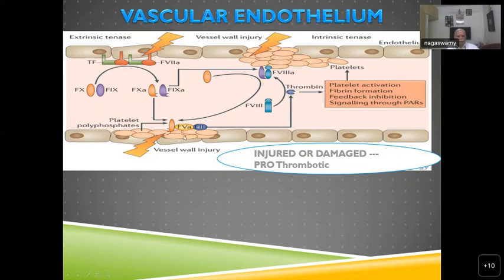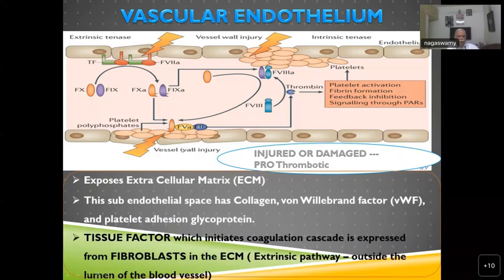Once the endothelial cells are lost, platelets immediately come and get stuck. Platelet adhesion — the sticking of platelet to the injured wall — should be distinguished from aggregation. Once adherent to the injured wall, platelets get activated, and then begin aggregating more platelets. The initial step is called platelet adhesion, not aggregation.